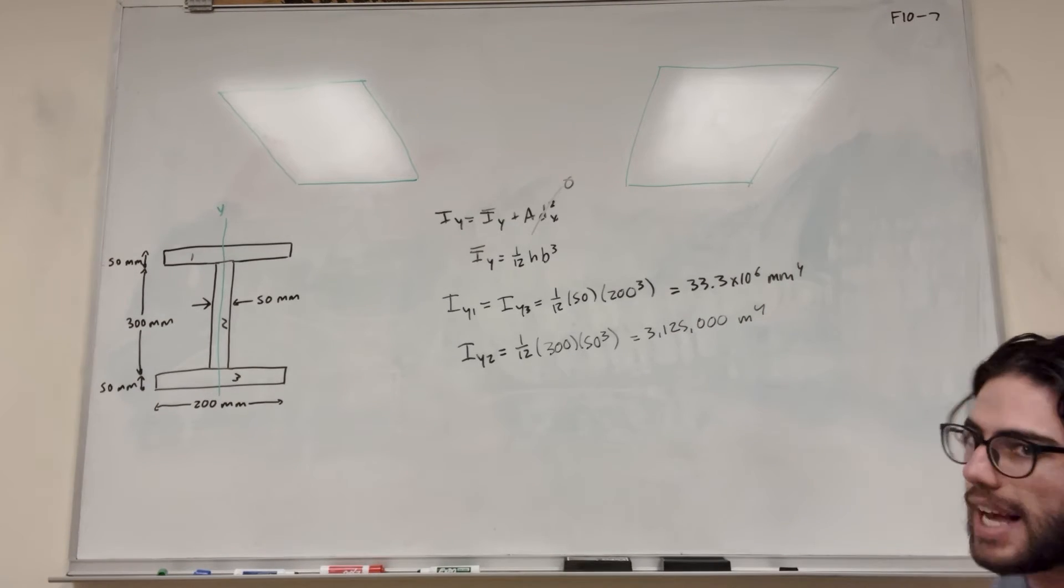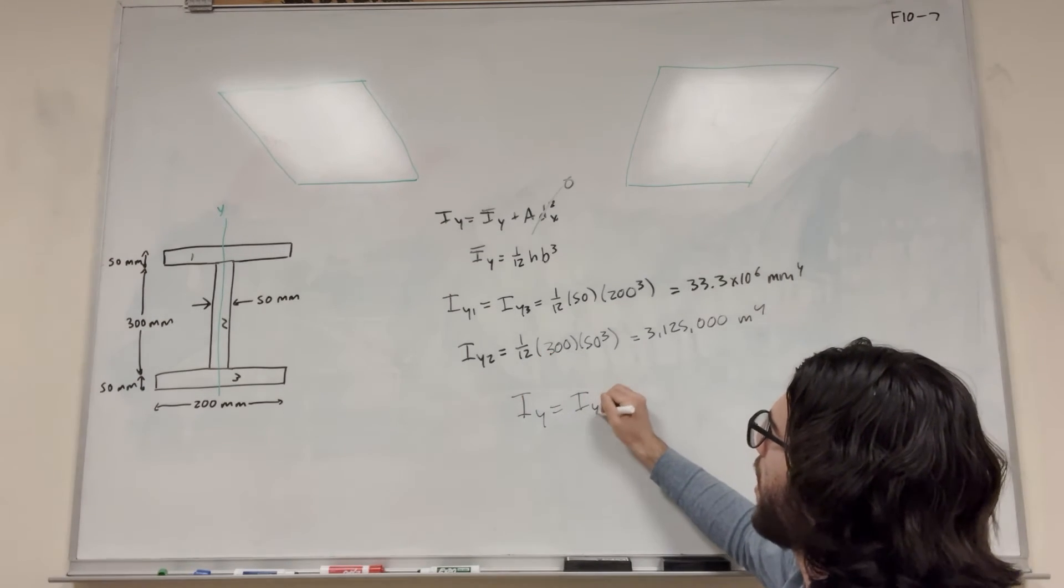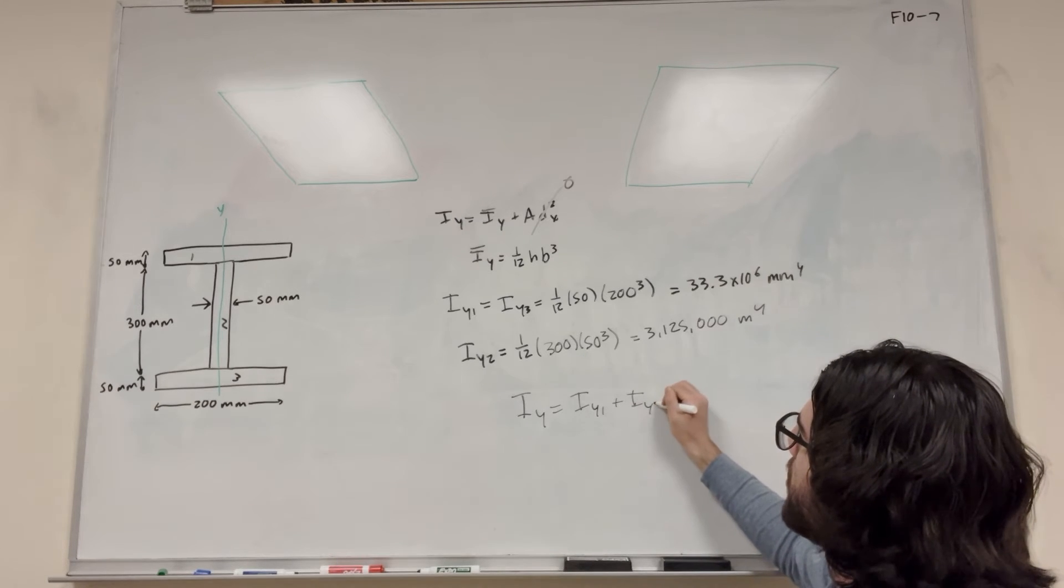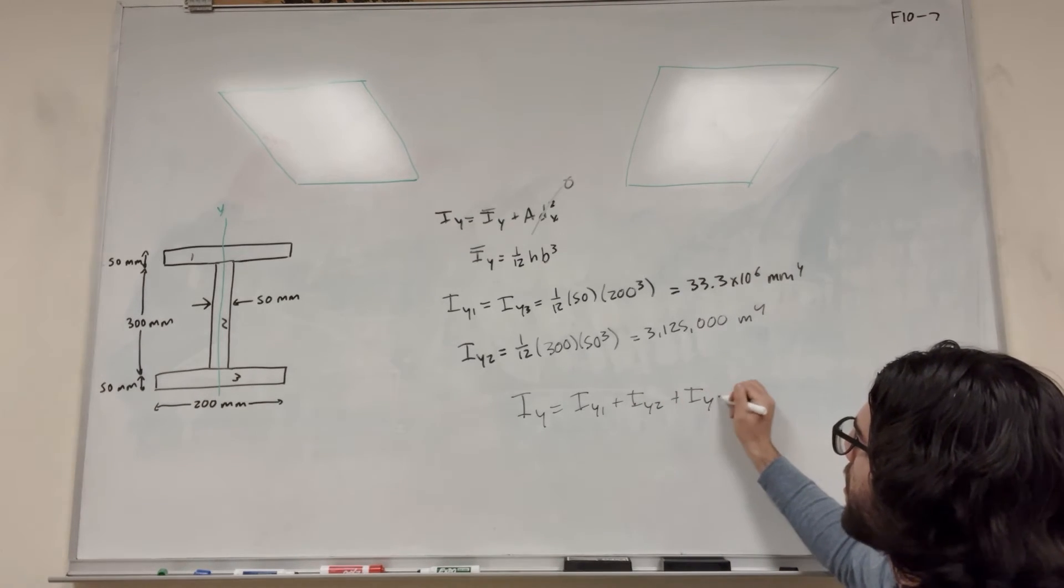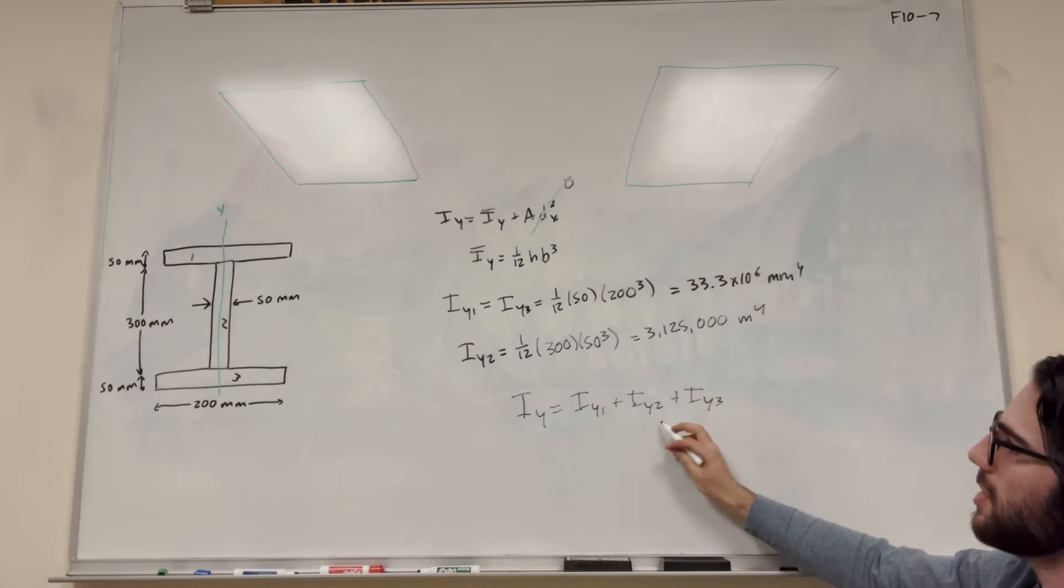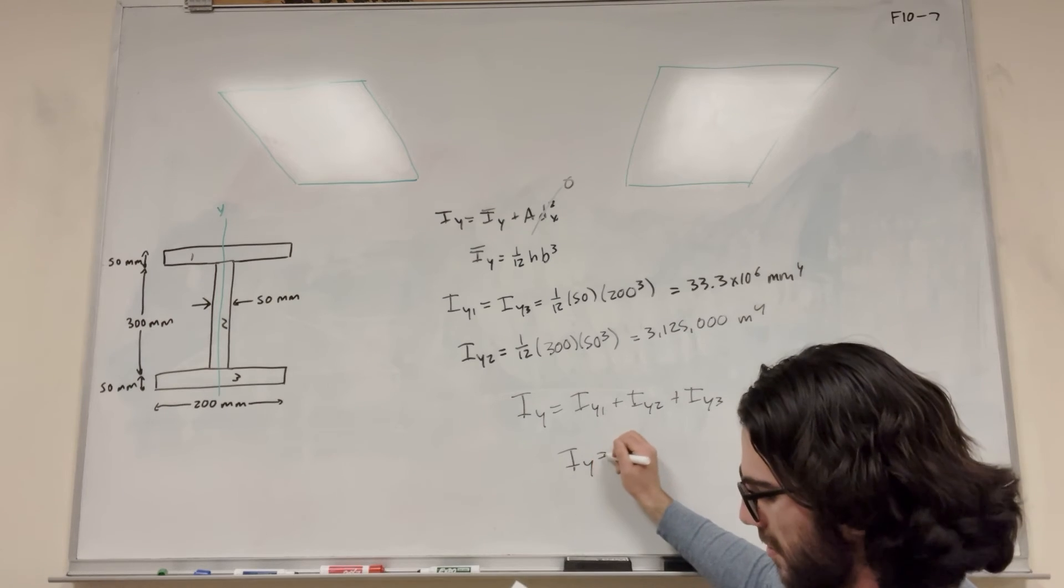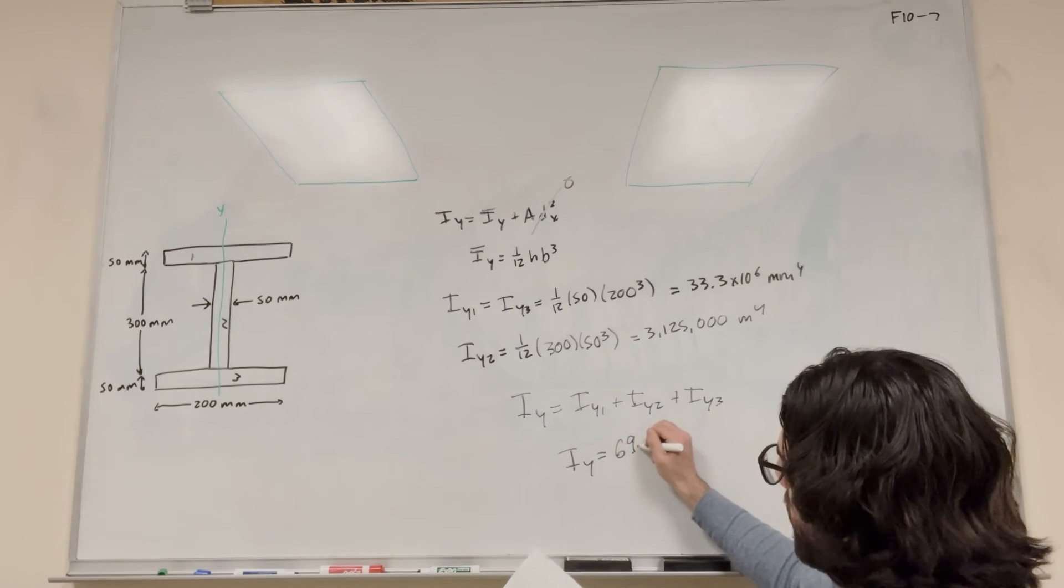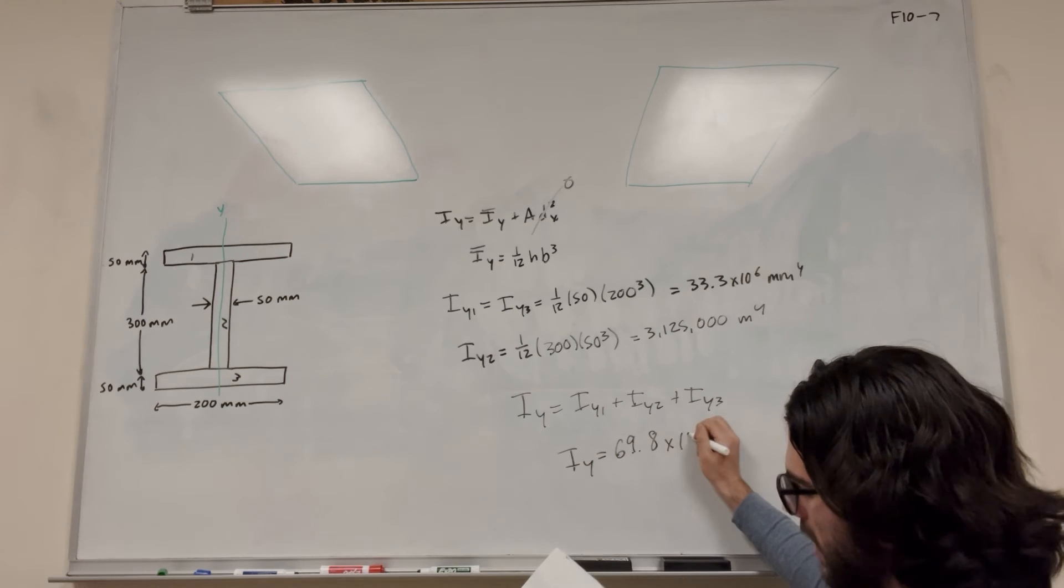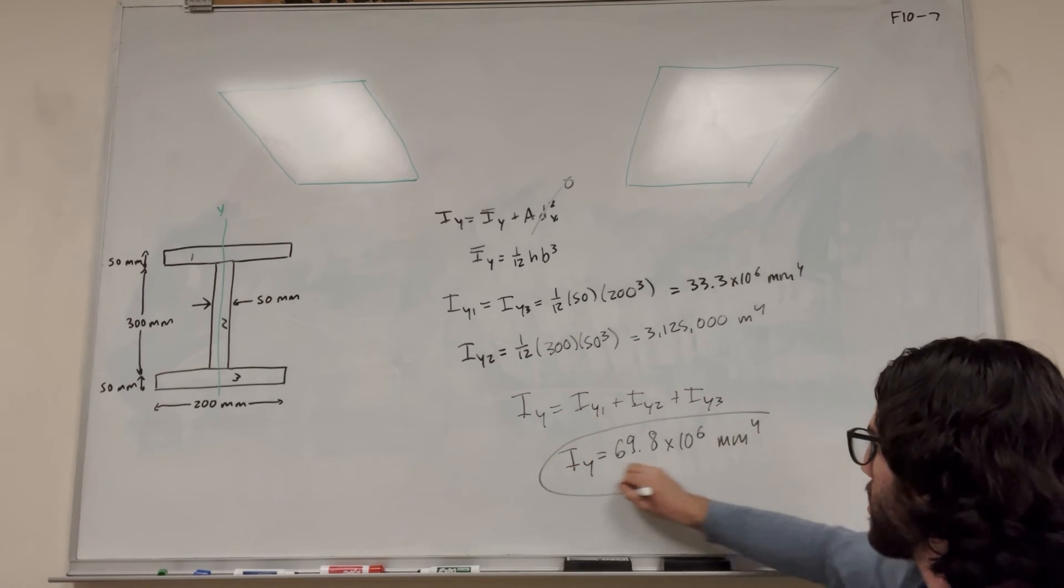So then simply all you have to do is add these up, right? So I_y is equal to I_y of 1 plus I_y of 2 plus I_y of 3, where I_y of 1 and I_y of 3 are both this number and I_y of 2 is this number. So you add those up. It's going to be 69.8 times 10 to the sixth millimeters to the fourth, and that's your final answer.